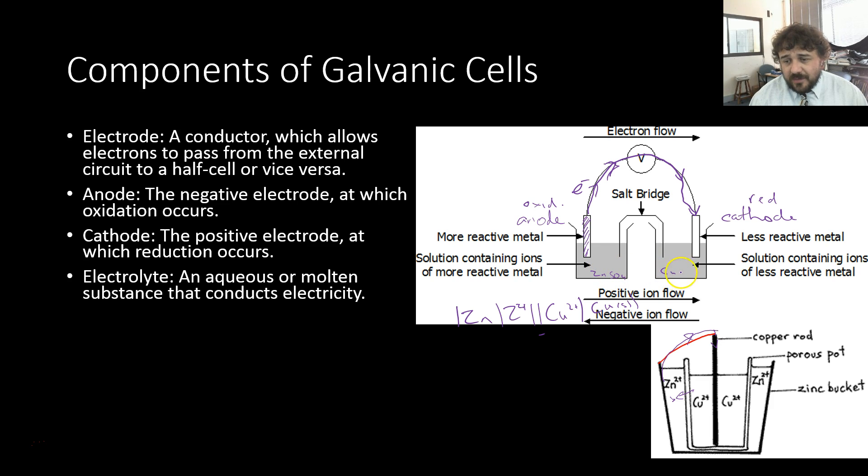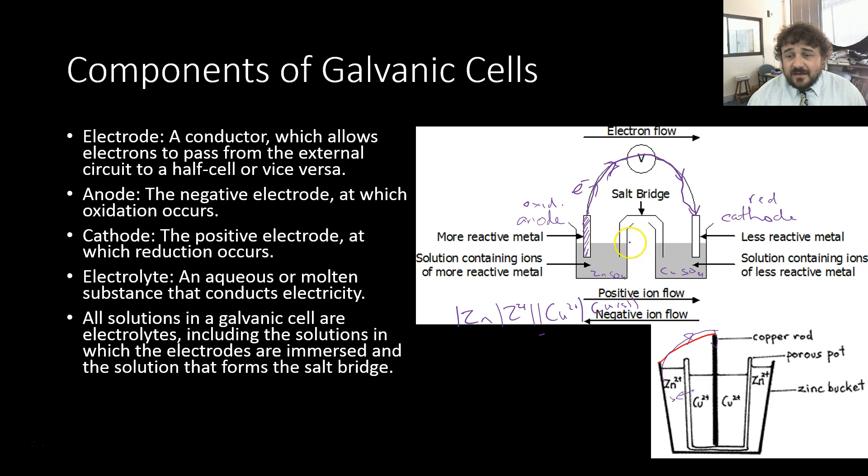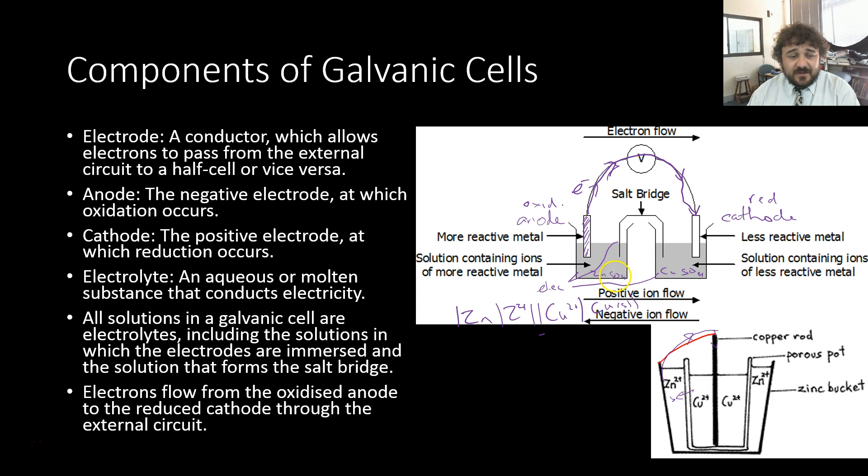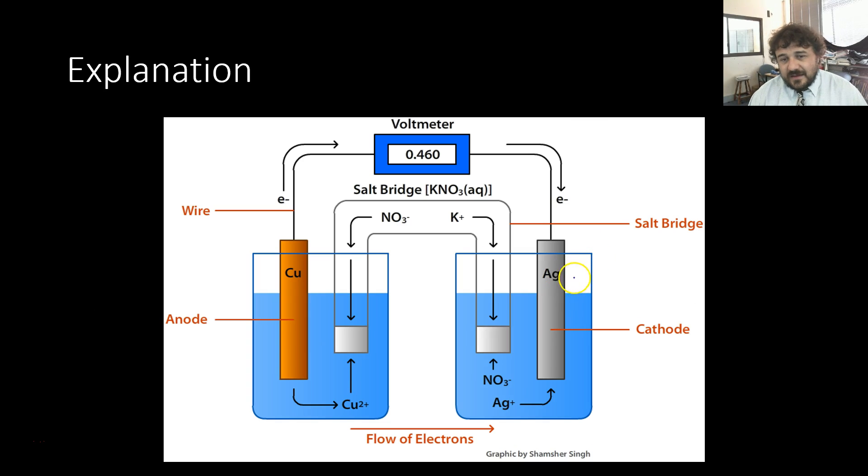Those are our electrolytes. But in a galvanic cell, the salt bridge is also an electrolyte. So there's three electrolytes there, or the solution that makes the salt bridge. Basically, the electrons flow from the oxidized anode to the cathode. Remember, the cathode is positive because it attracts the electrons. We call the anode negative because it repels the electrons.